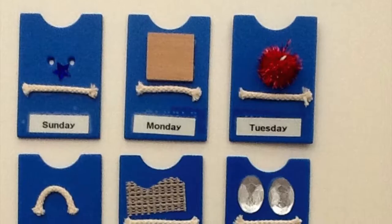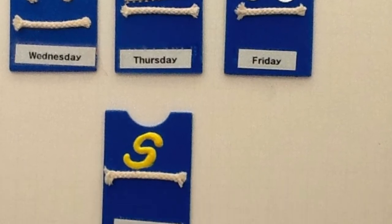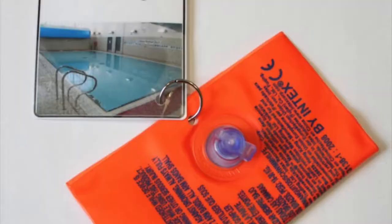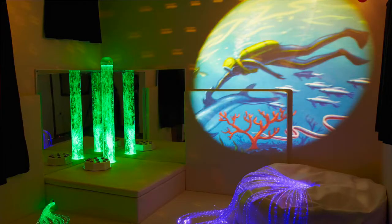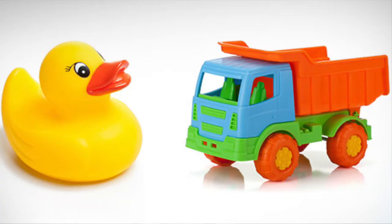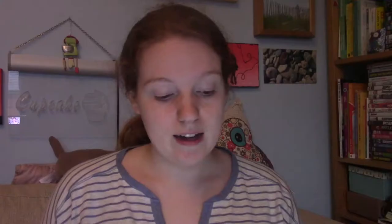Some types of visual supports are tactile symbols and objects of reference. For example, if you wanted to show someone they were going swimming, you might bring them their swimming costume or some goggles and they would know by seeing that what's happening. You might also show them a picture of the swimming pool or a symbol. Other types include photographs, short videos, real objects or tiny versions of them, colored pictures, line drawings, symbols, PECS, and written words.